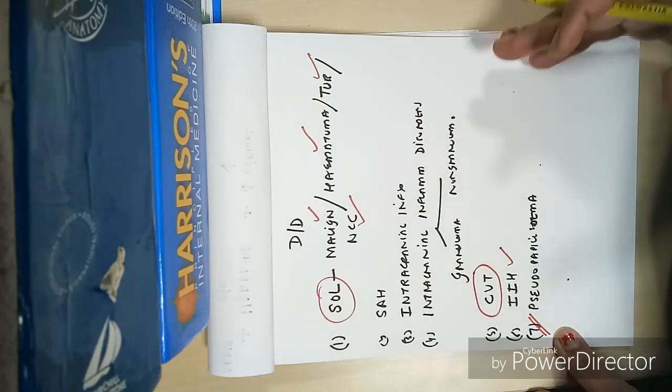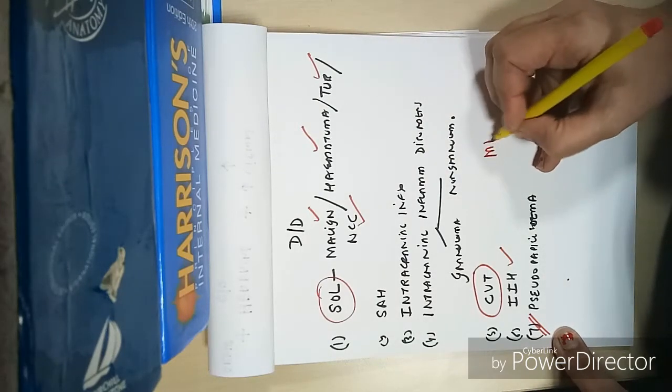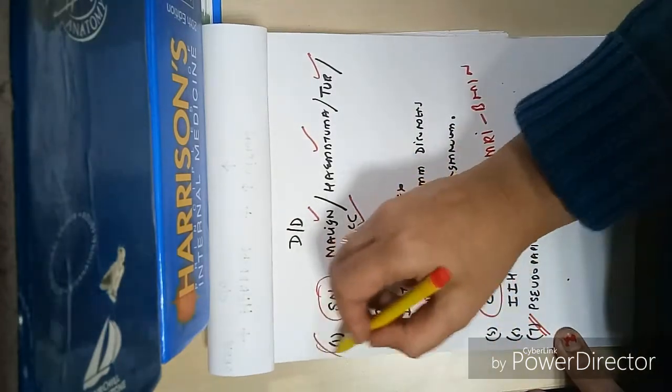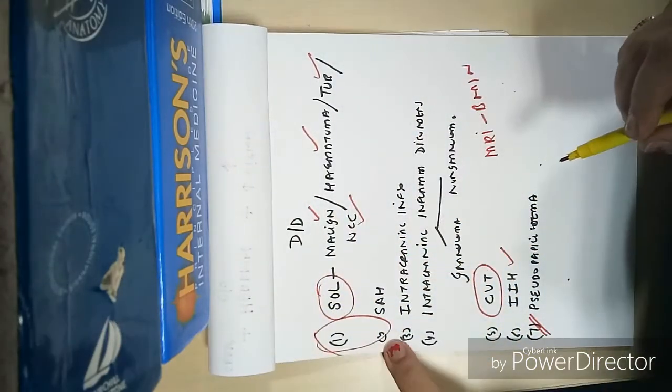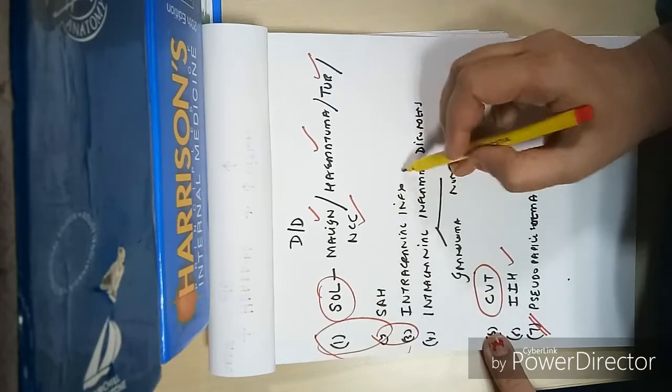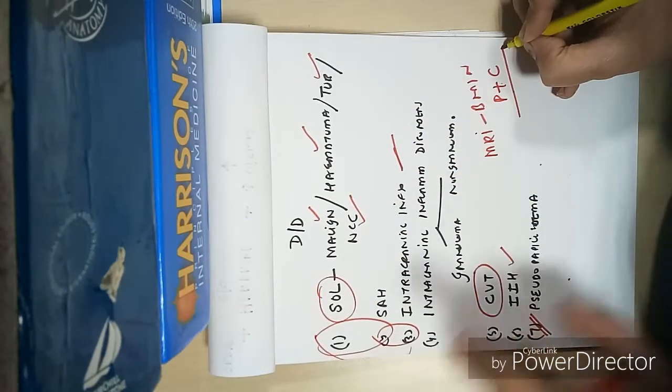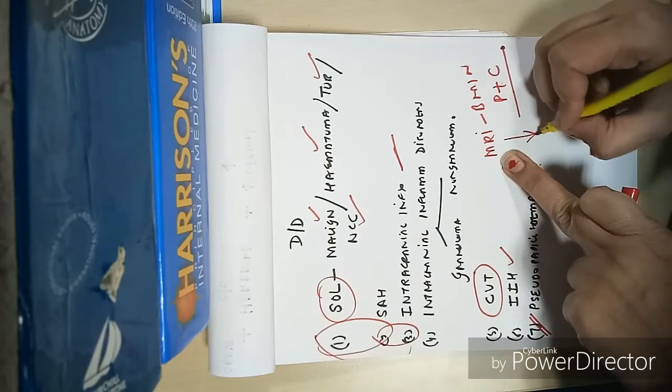What are the various investigations you need? You need MRI brain to rule out these causes: SOL, SAH, intracranial infections. For that you will do plain with contrast. If this is normal, then you will also go for MRV to rule out cortical venous thrombosis.